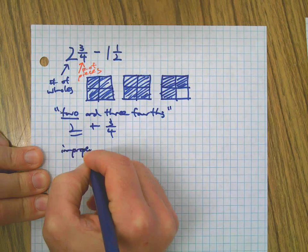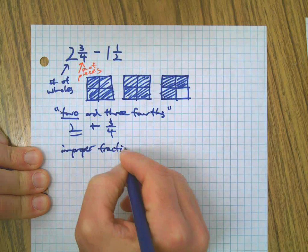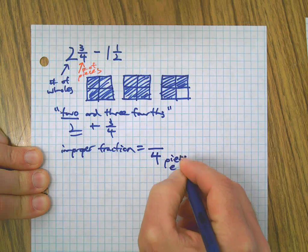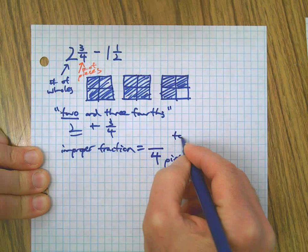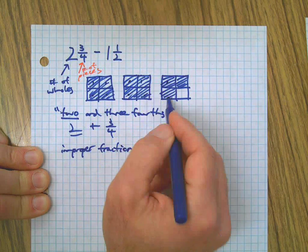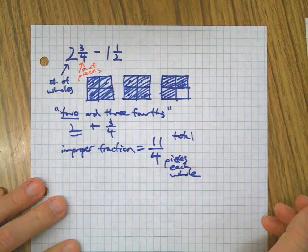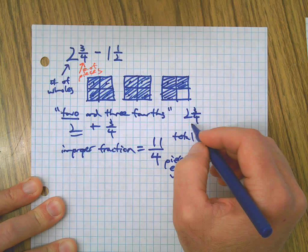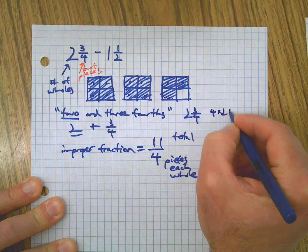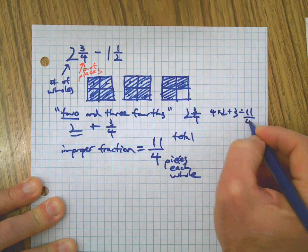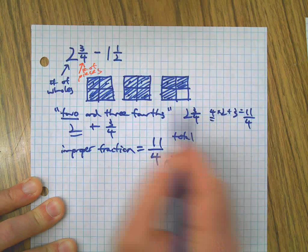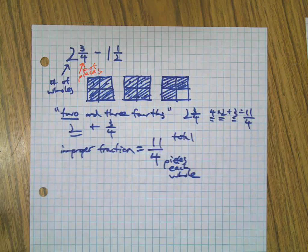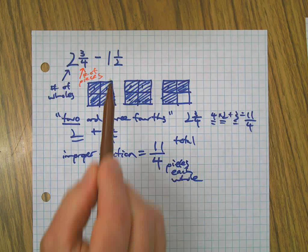If you wanted to convert this to an improper fraction, it's simple: four pieces in each whole, and counting all total pieces gives eleven. This also shows why the standard algorithm works — four times two plus three equals eleven — you can see it happening visually: there's the four, times two, plus three left over. Anyway, back to business: we're taking away one and a half from two and three-fourths.